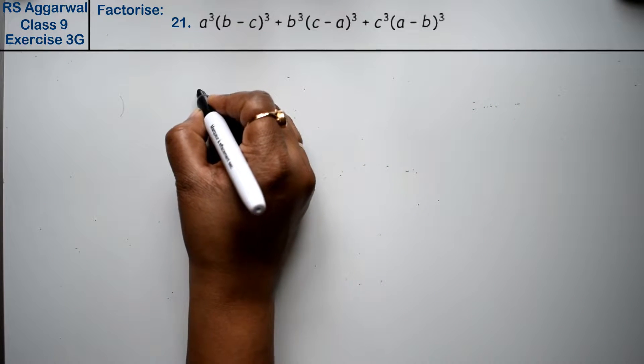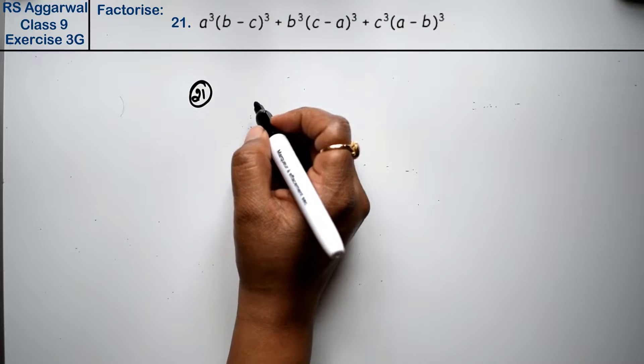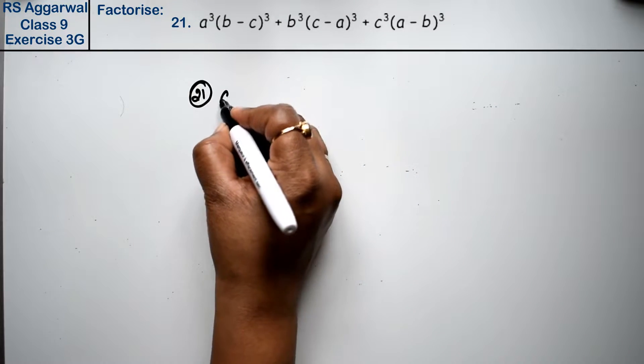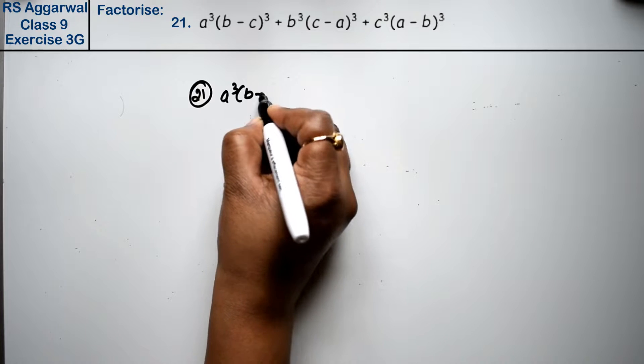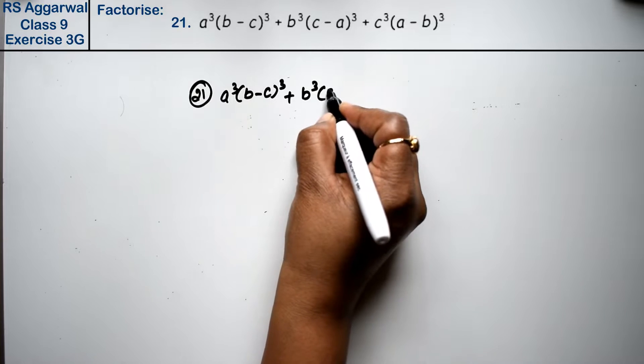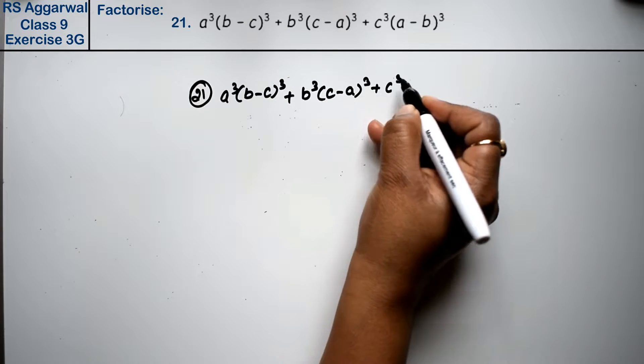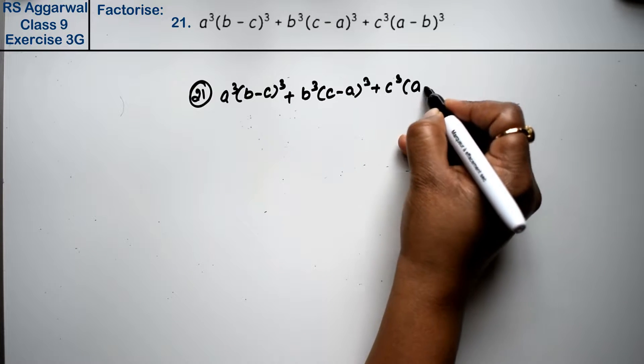Let's do question number 21 of exercise 3G, that is factorization of polynomials. Question number 21 is a³(b - c)³ + b³(c - a)³ + c³(a - b)³.